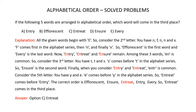Now you are left with Entry, Entreat, and Ensure. Among these 3 words, EN is common, so now you have to consider the third letter. The third letters are T, T, and S. S comes before T in the alphabet series, so Ensure is the second word.